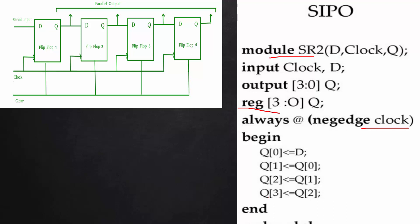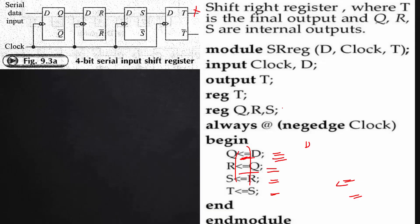During the negative clock cycle, d is assigned to q, q[0] to q[1], q[1] to q[2], and q[2] to q[3], directly using different bit positions of the q array rather than separate intermediate register variables.